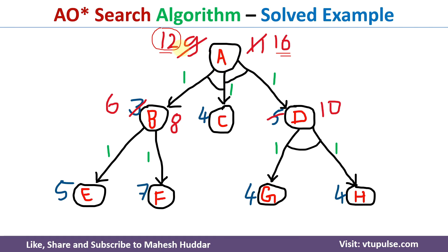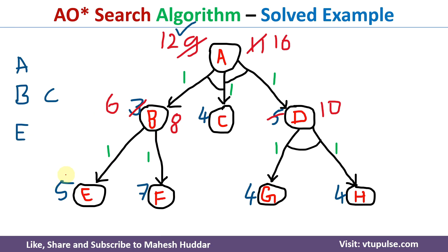So we can say that the optimal value of this root node A is equivalent to 12. The optimal path is: to solve A, we need to solve B and C. C is already solved. To solve B, E is the best option since its cost is 6. Solving E solves B, and solving B and C solves A. This is how we get the optimal path with an optimal value of 12 using the AO* search algorithm.